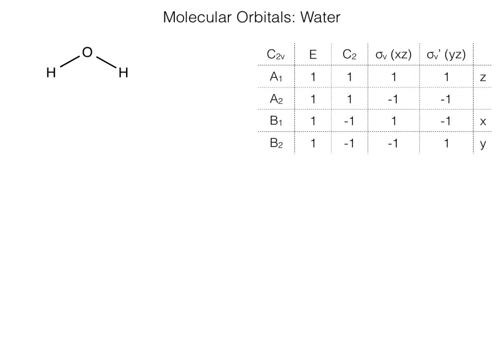Here we're going to talk about the molecular orbitals of water and how to determine them, and ultimately we'll be sketching out a molecular orbital diagram. To start off, I've selected water and I will draw the coordinate axes as will best help us during this process. I've also noted the character table on the right, which is C2V for this particular point group.